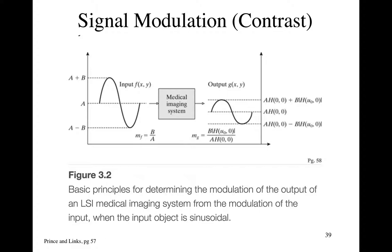The reason it's convenient to look at it that way is because most of the time the description of how your imaging system modifies the spatial frequencies — from the input side of the system to the output image — is described as a linear system, where frequencies come in, get attenuated a certain amount, and come out the back end of your detector.